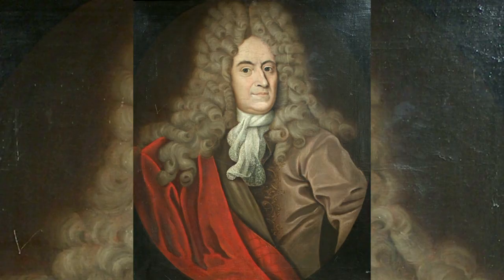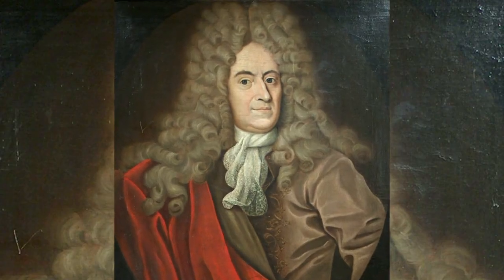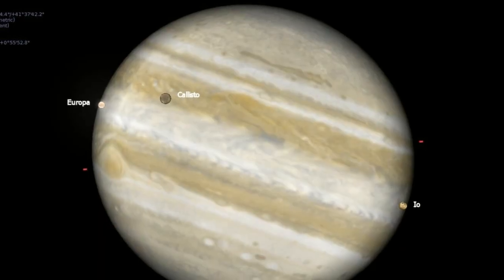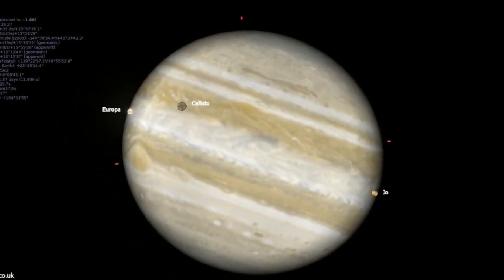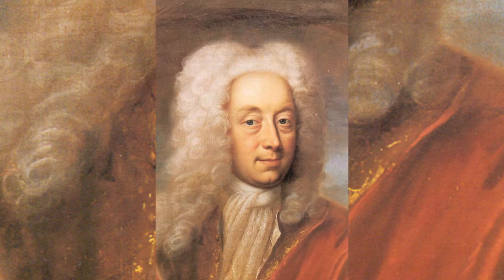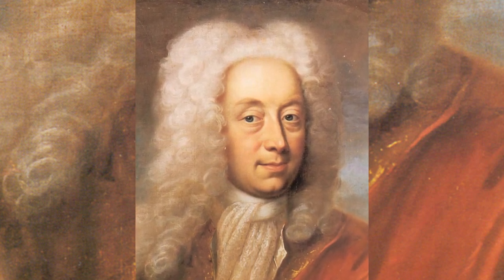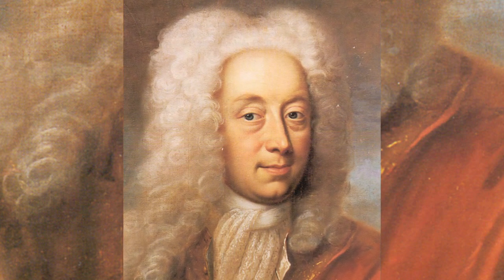Until 1676, when Ole Romer observed that the periods of Jupiter's innermost moon Io appeared to be shorter when the Earth was approaching Jupiter than when receding from it. He concluded that light travels at a finite speed and estimated that it takes light 22 minutes to cross the diameter of Earth's orbit.